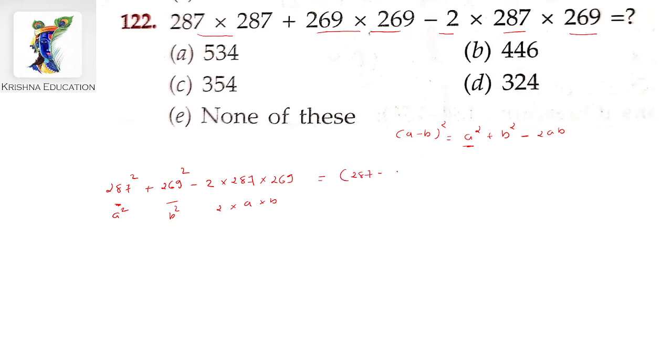287 minus 269. Here we have the subtraction: 287 minus 269. Working through the digits, we get 18.